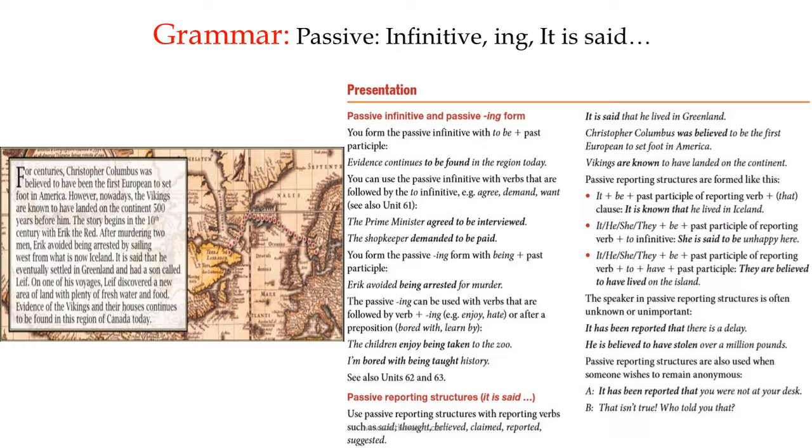For past participle, there are regular verbs for which you add ed or d, and for irregular verbs there's a list which you should memorize by heart if you want fluency in English. The passive ing can be used with verbs that are followed by verb plus ing, like enjoy and hate, or after a preposition, for example bored with or learn by. Examples: the children enjoy being taken to the zoo; I'm bored with being taught history.